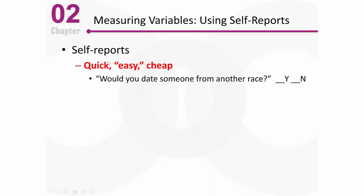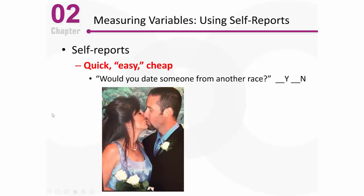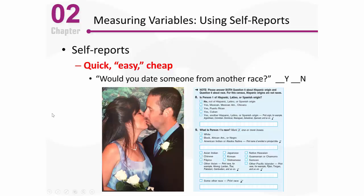Self-reports are quick, easy, and cheap — though 'easy' should really be in quotes, because there's nothing easy about research. Think about that question: would you date someone from another race? I married a woman who is Hispanic — her dad was Cuban and Puerto Rican. It seems really straightforward, something like race, but think about our census, which tracks that type of information. Not everybody agrees about how we classify races or even whether race and Hispanic classifications belong together.